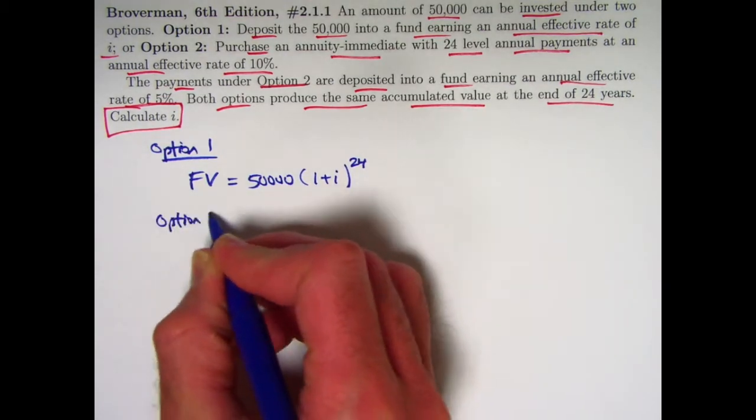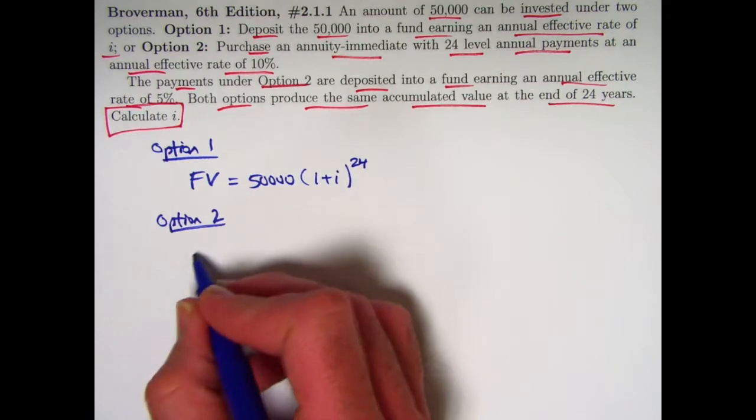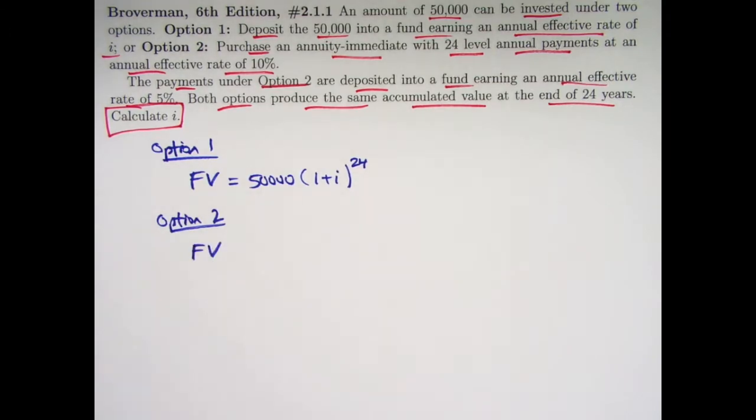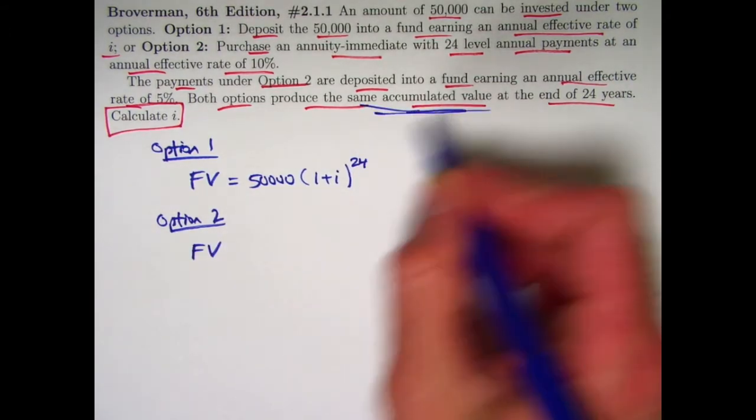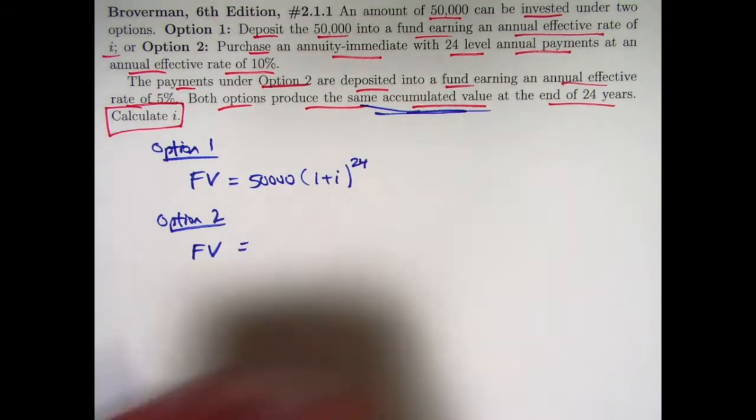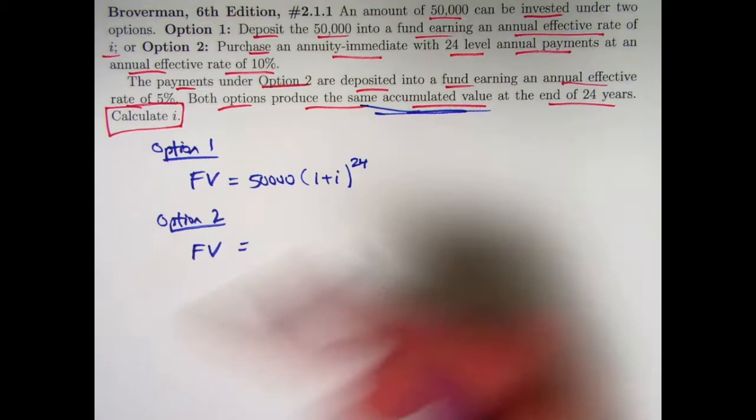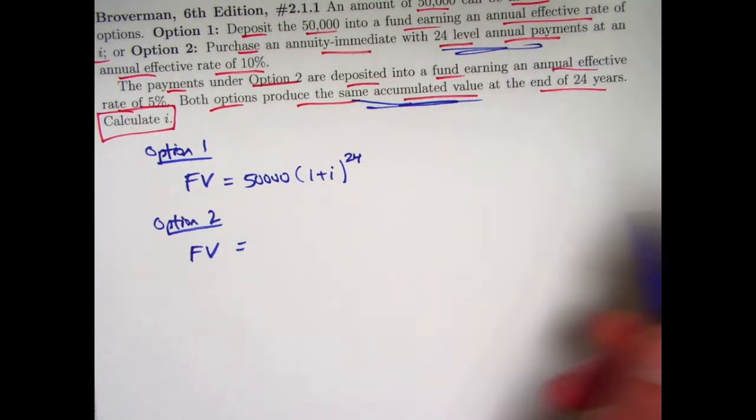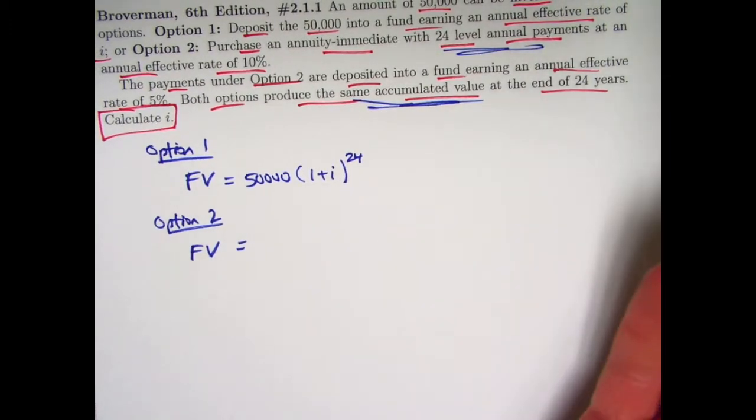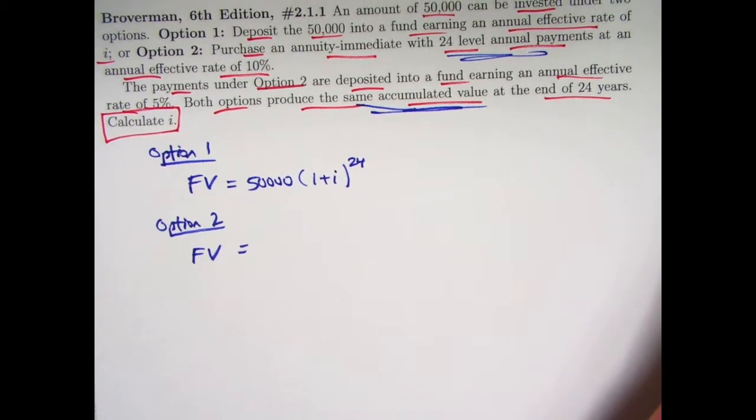Option two. What is the future value of option two? The same accumulated value of option one. We're going to set these things ultimately equal to each other. Well, you're going to get these payments, these 24 annual payments, call the amount of that X. X would be unknown at the moment.